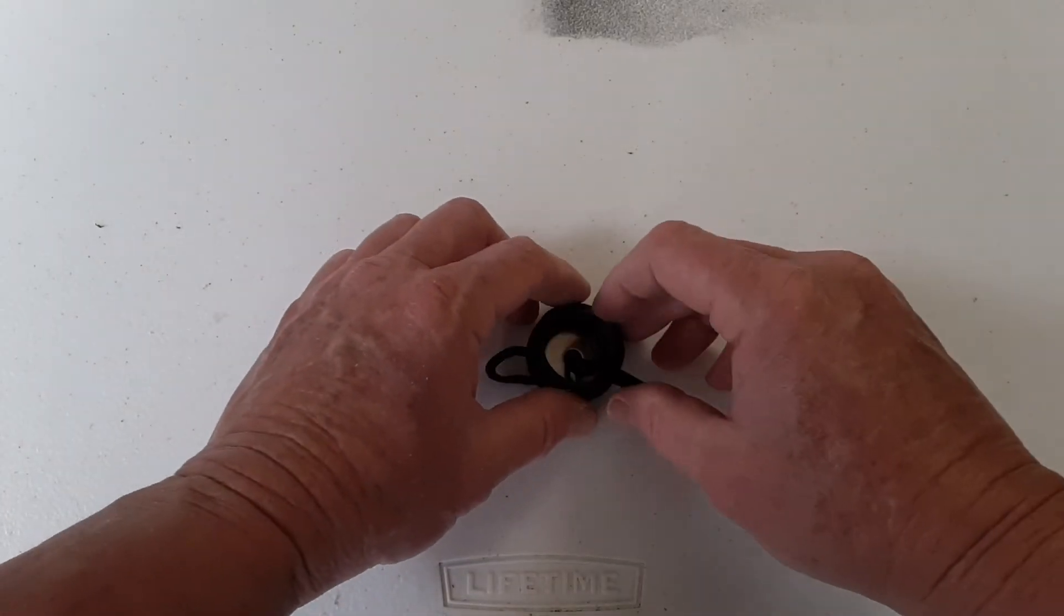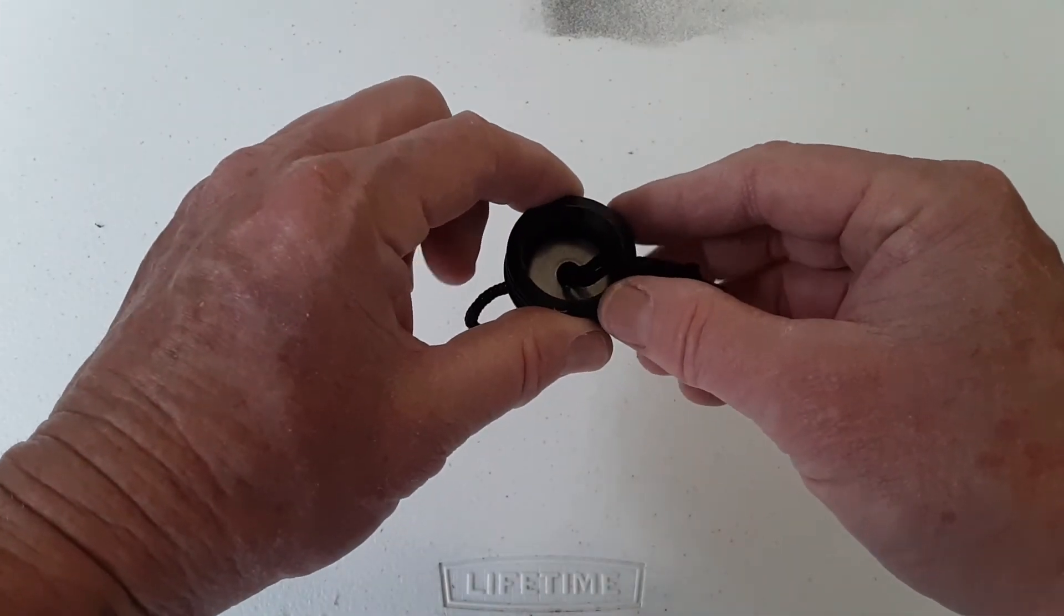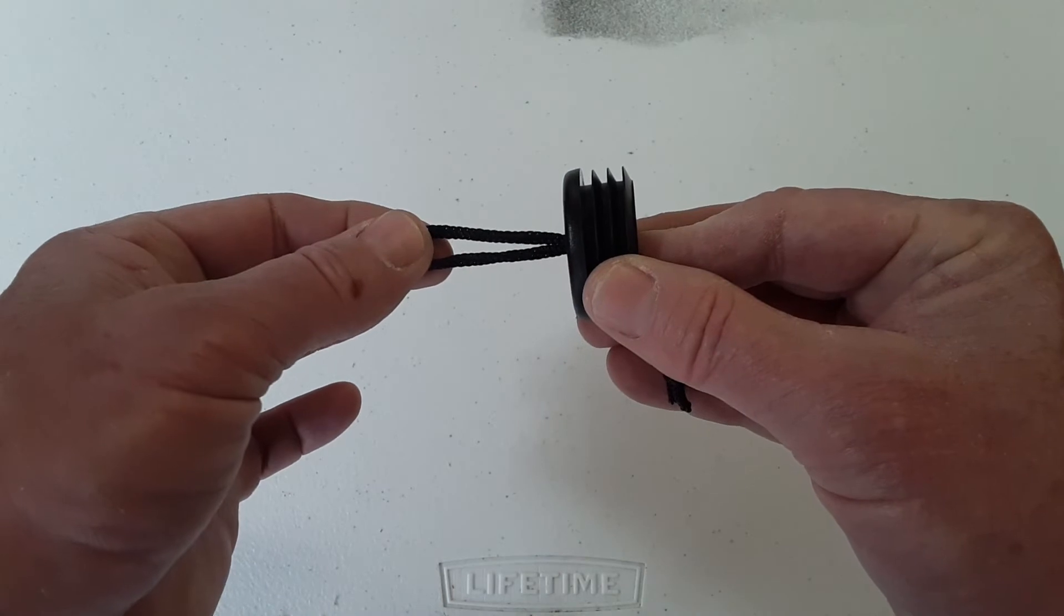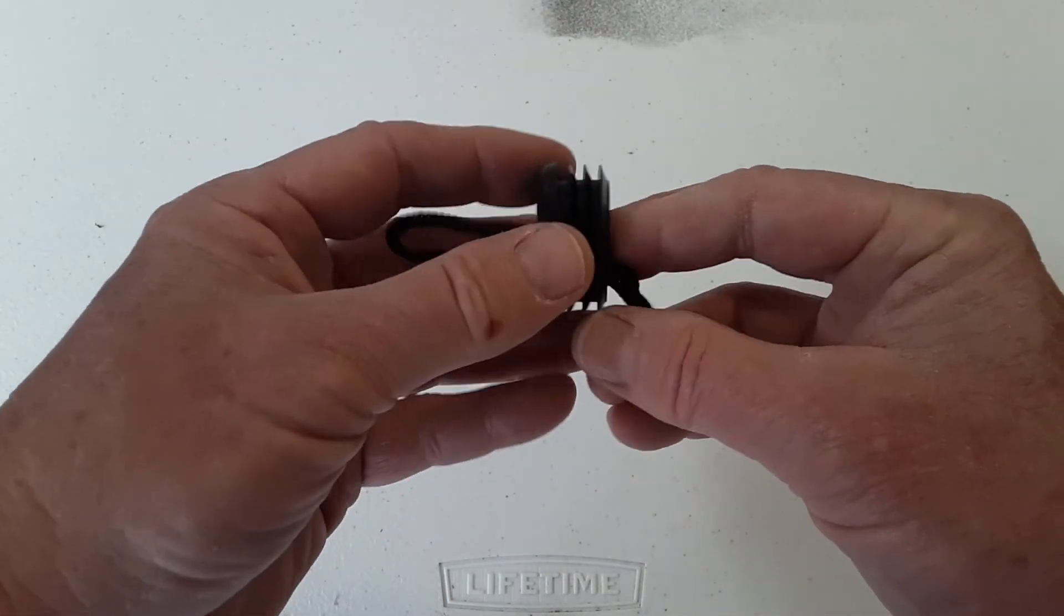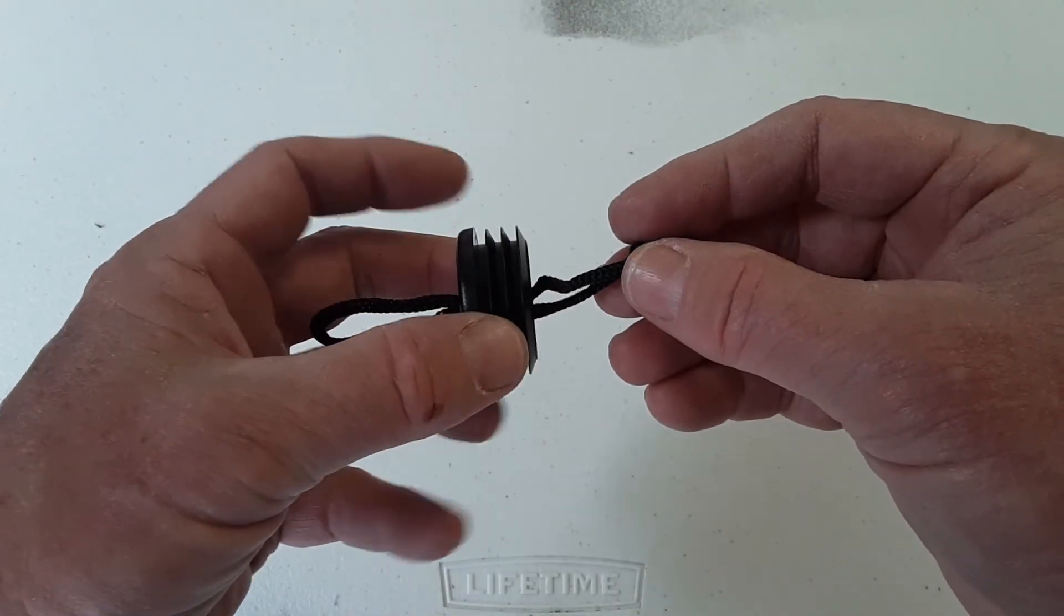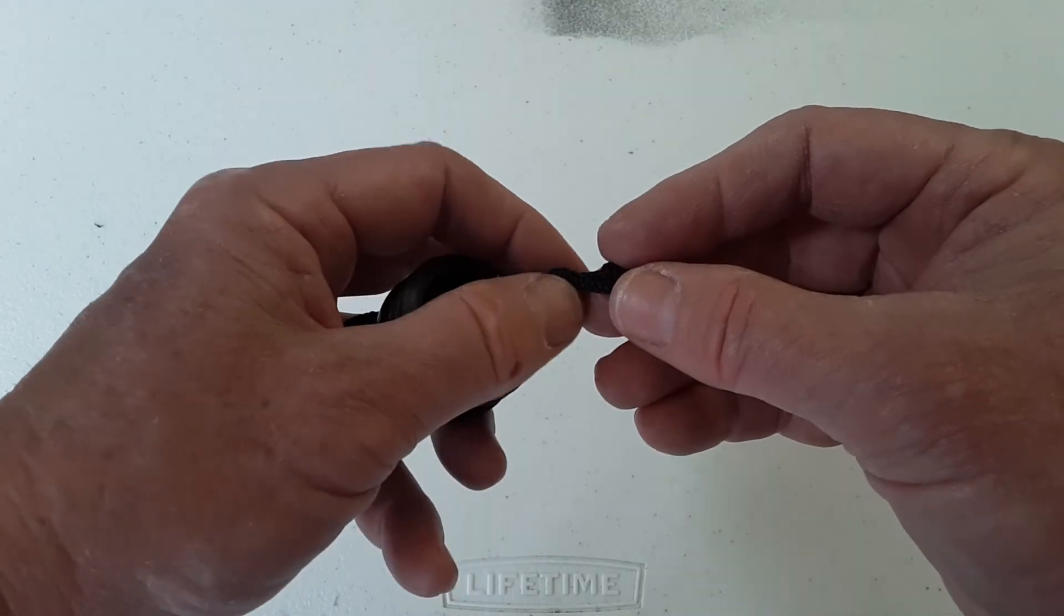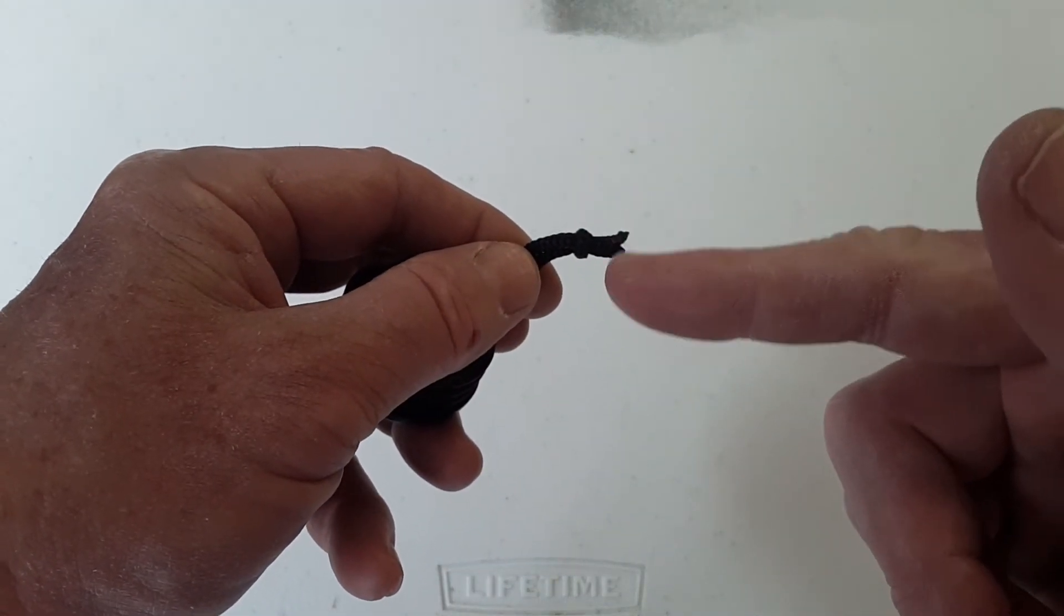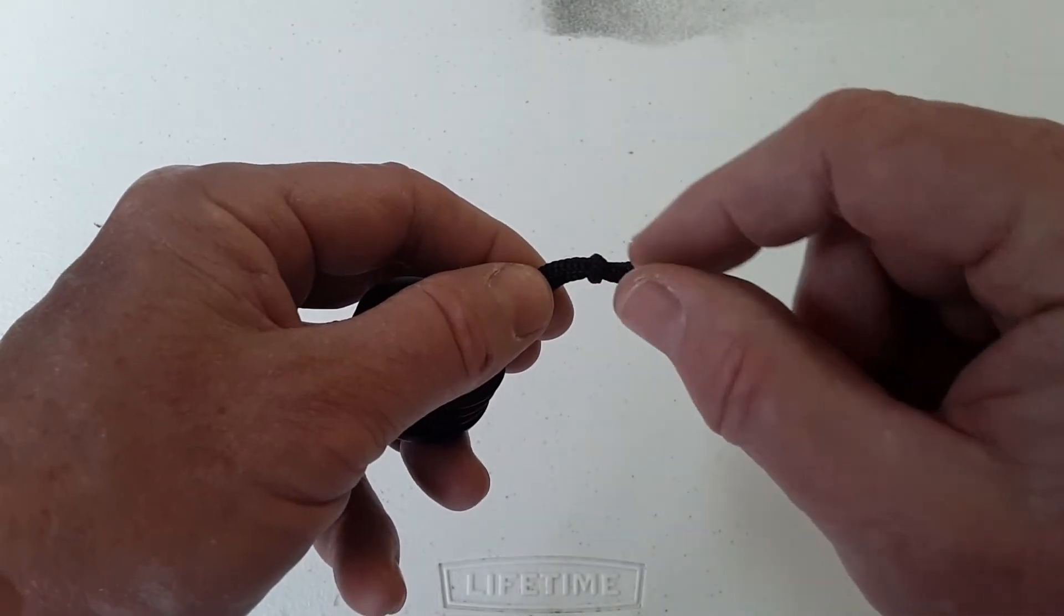Alright, everything's been assembled. You can see the fender washer inside. And then I also made a loop with the paracord and threaded both ends through both the cap and the washer and then tied a knot on the end. And then I will singe the ends with a lighter just to make sure the knot doesn't come loose.